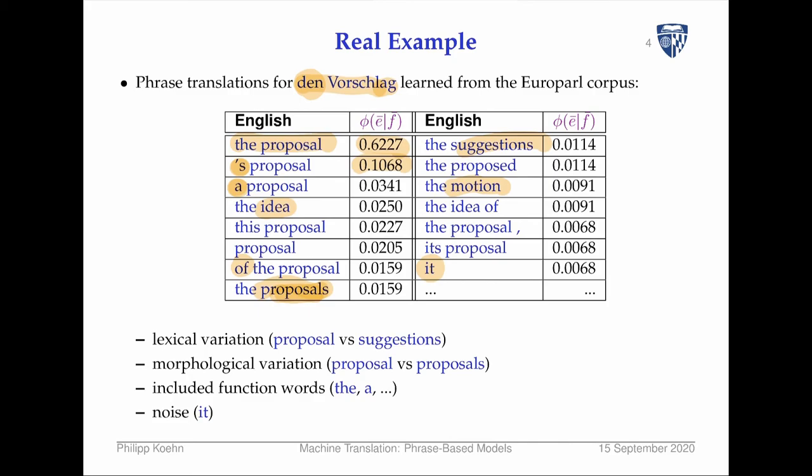But you also have things like 'it' here, which is kind of interesting. This comes from a sentence pair where 'den Vorschlag' appeared in German, but apparently it had appeared in previous sentences, so the English translation was good enough to just refer to it as 'it.'